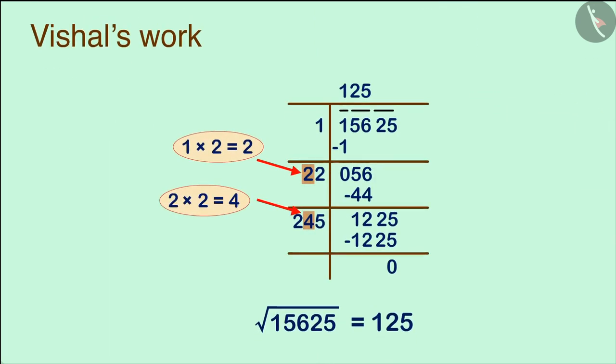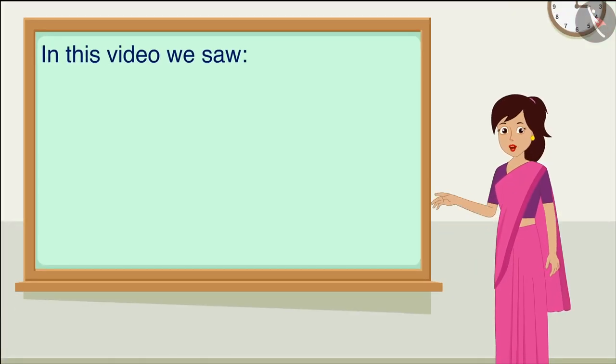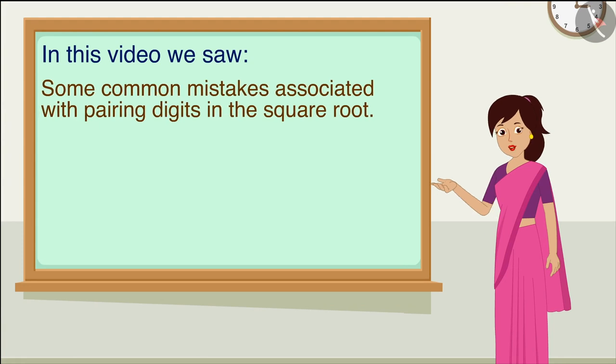Vishal's solution is correct. Vishal found the square root of the number 15,625 in this way. This is the correct method. So in today's video, we saw some common mistakes associated with pairing digits in the square root. Thank you.